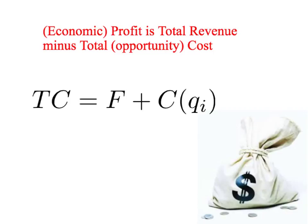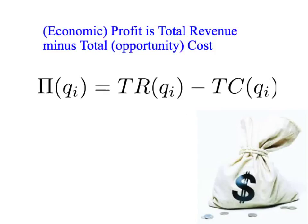We've also looked at what we mean by total opportunity cost. It includes the fixed costs — the costs that do not change as you vary your output — plus the variable costs. Add them up to get the total cost. For any level of output, our total profit is just our total revenue at that level of output minus our total cost at that level of output.